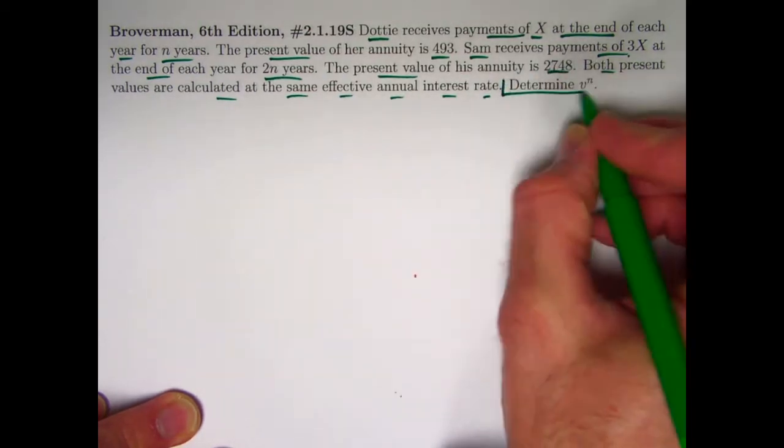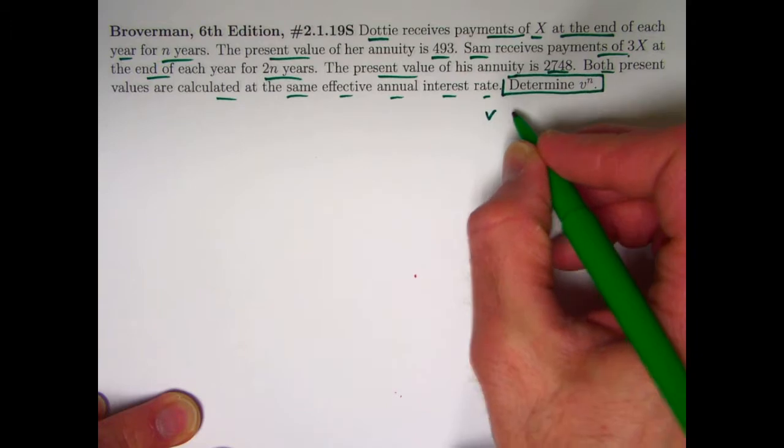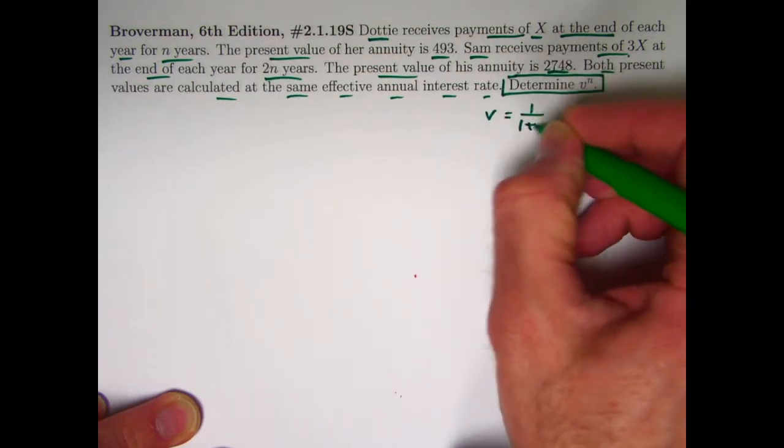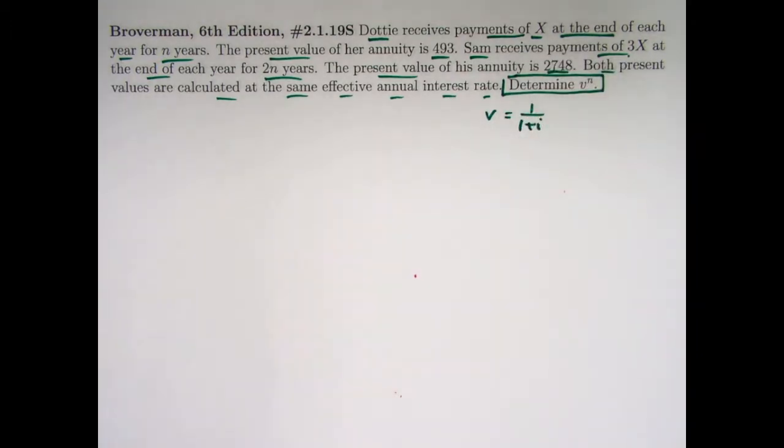The goal is to determine v to the n, where v is the present value discount factor. It's the reciprocal of 1 plus i. As I've done in recent videos, I'm going to solve this in two ways, one of which will involve some fundamental algebra skills, and another of which will involve a number line, a timeline.